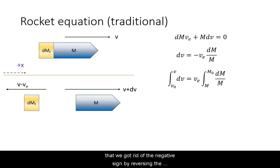Note that we got rid of the negative sign by reversing the integration limits on the mass. Delta v. Our final equation, the rocket equation, shows a logarithmic relationship between delta v and the mass of the rocket.